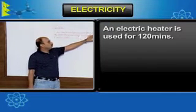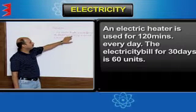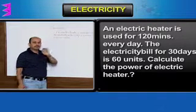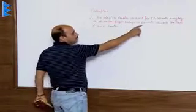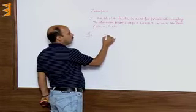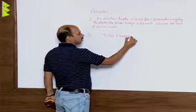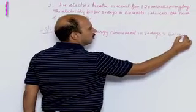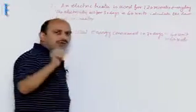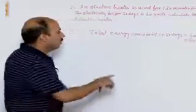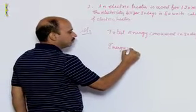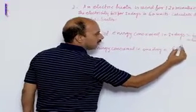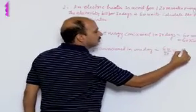Example 2: An electric heater is used for 120 minutes every day. The electricity bill for 30 days is 60 units. Calculate the power of the electric heater. Total energy consumed in 30 days is equal to 60 units, which means 60 kilowatt hours. So energy consumed in one day is equal to 60 divided by 30, that is 2 kilowatt hours.